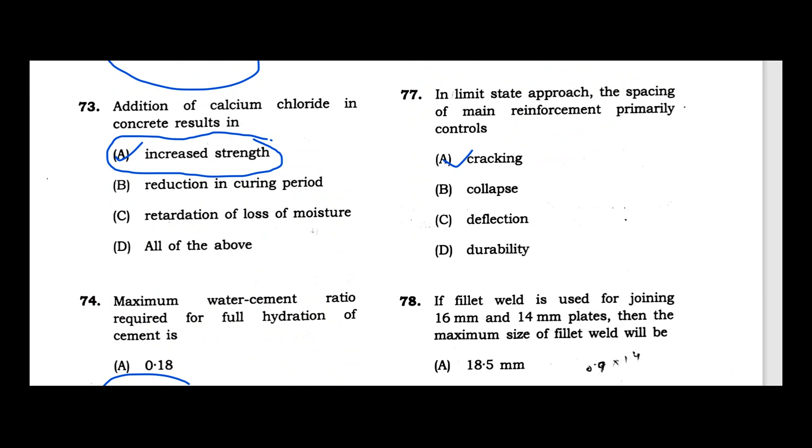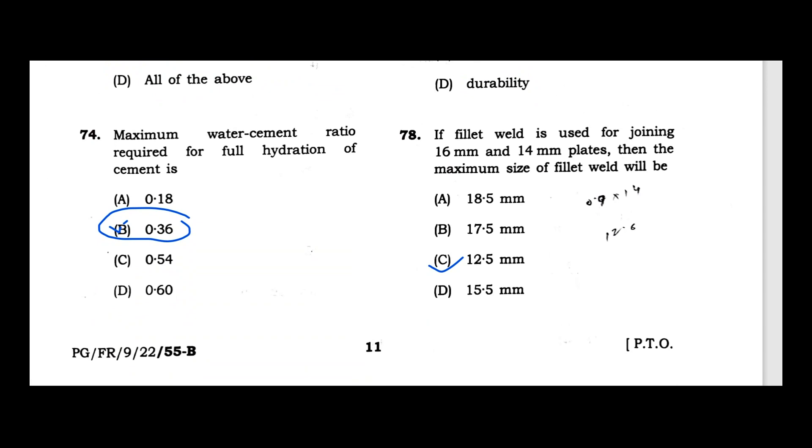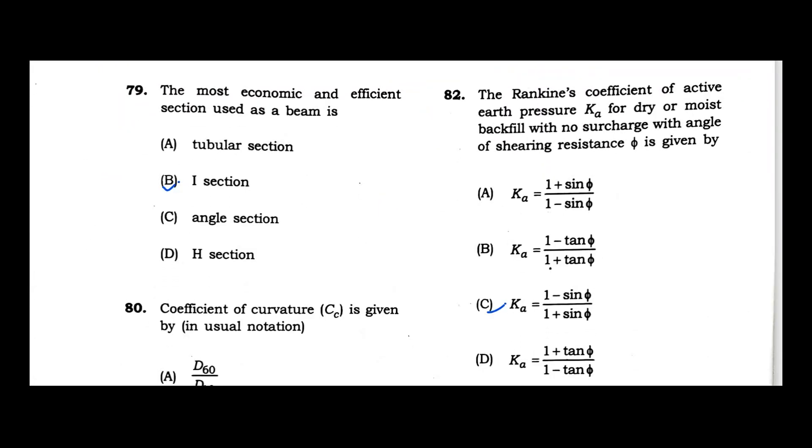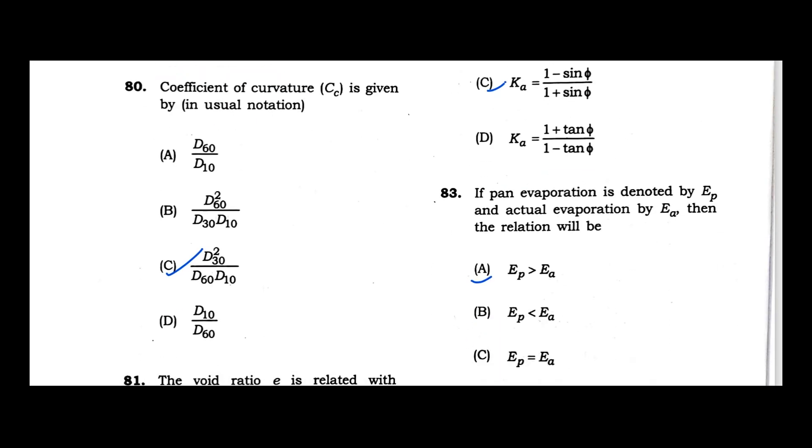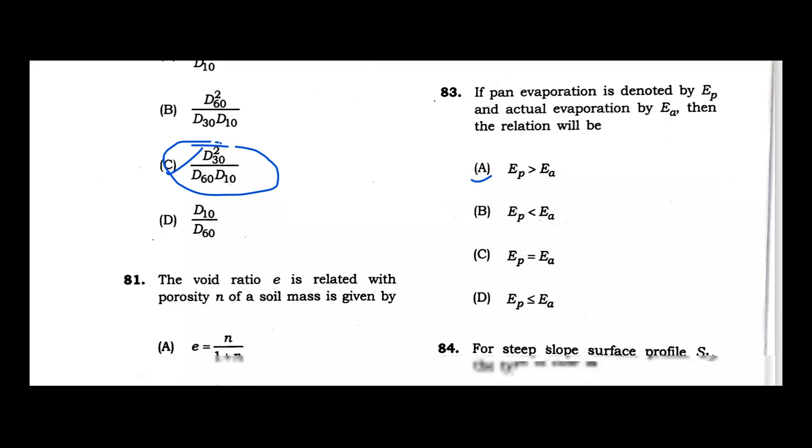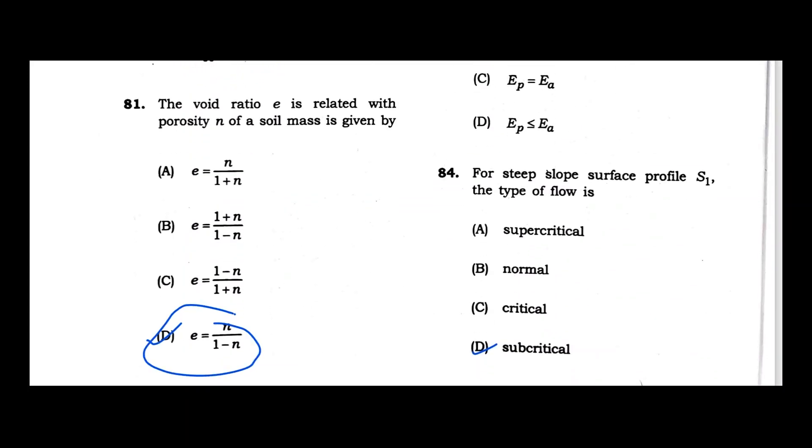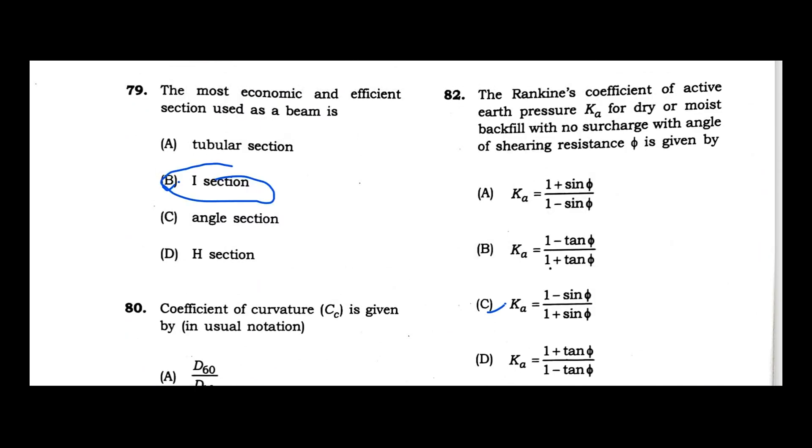Question 78: DRC fillet weld is used to join 16mm and 14mm plate. The maximum size of the fillet is 0.9 times 14mm which equals 12.5mm as per IS code provisions. Question 79: The most economic and efficient section of a beam is I section. Question 80: Coefficient of curvature is d30²/(d60×d10). Question 81: Void ratio and porosity relationship is E = N/(1-N). Question 82: Rankine coefficient of active earth pressure for dry or moist backfill with no surcharge with angle of shearing resistance is (1-sin φ)/(1+sin φ).